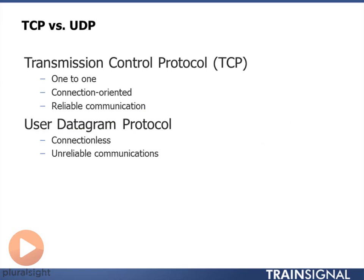Another way of realizing that TCP is reliable is that it also uses a send-and-acknowledge type system. Once the three-way handshake is done and we're actually communicating data, I will send you data and then you will reply back an acknowledgement saying 'got it.' I send you data, you say 'got it.' You send me data, I send you 'got it.'